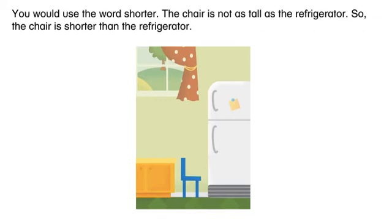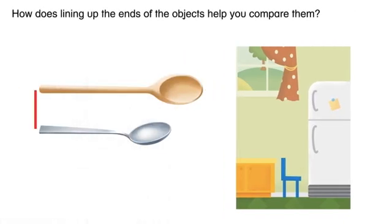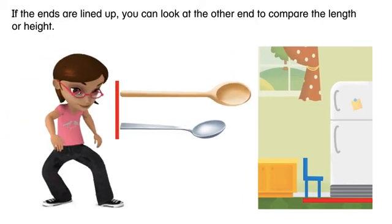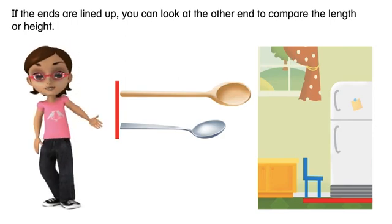You would use the word shorter. The chair is not as tall as the refrigerator, so the chair is shorter than the refrigerator. How does lining up the ends of the objects help you compare them? If the ends are lined up, you can look at the other end to compare the length or height. Now you know how to compare objects by length and height.